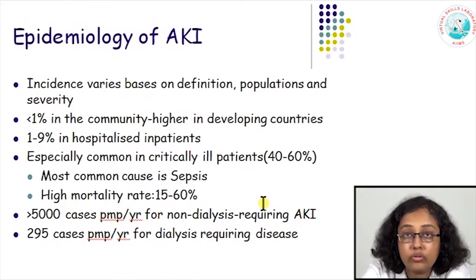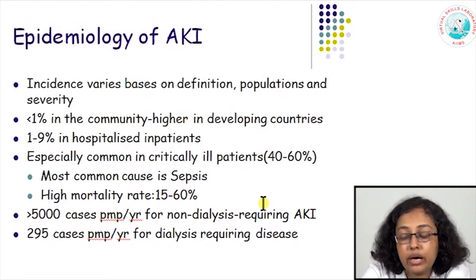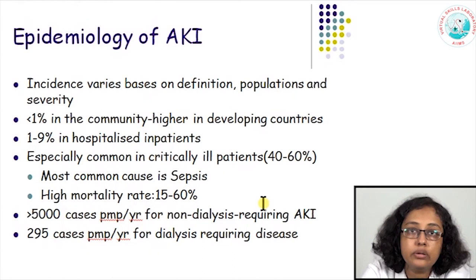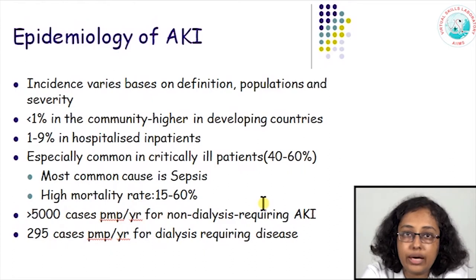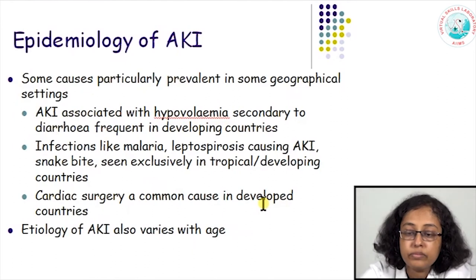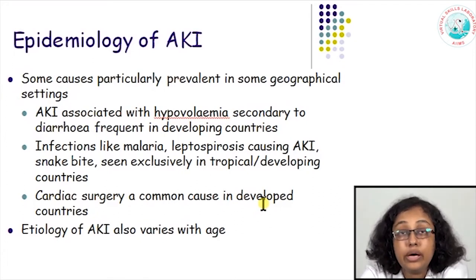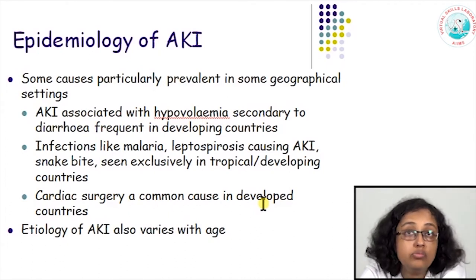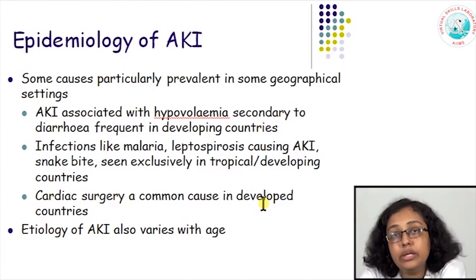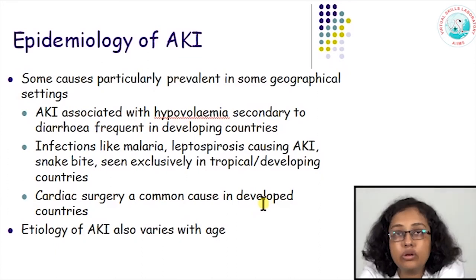Acute kidney injury is very common, especially hospital-acquired AKI in critically ill patients in the ICU. Most ICU patients develop some sort of renal insult, with incidence ranging from 40 to 60 percent. It is especially common when patients have sepsis, and critically ill patients who develop acute renal failure have a very high mortality — up to 40 to 60 percent. The pattern and causes of acute renal failure also vary across geographical settings. In developing countries like India and African nations, acute renal failure secondary to hypovolemia and dehydration from diarrhea and vomiting is very common, while infections like malaria, leptospirosis, and snake bites are almost exclusively seen in tropical and developing nations.